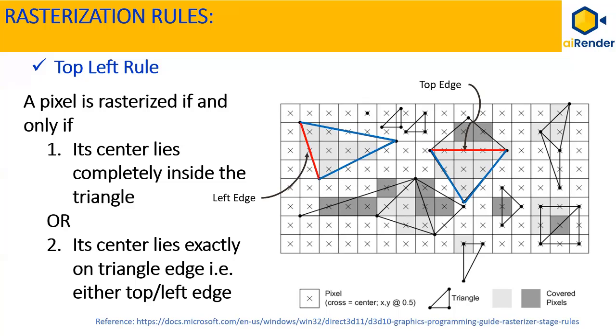A top edge is an edge that's exactly horizontal and lies above other edges, and a left edge is a non-horizontal edge that's on the left side of the triangle. As you can see in the figure, the red edge in the triangle on the left is a left edge, and the red edge in the triangle on the right is a top edge.